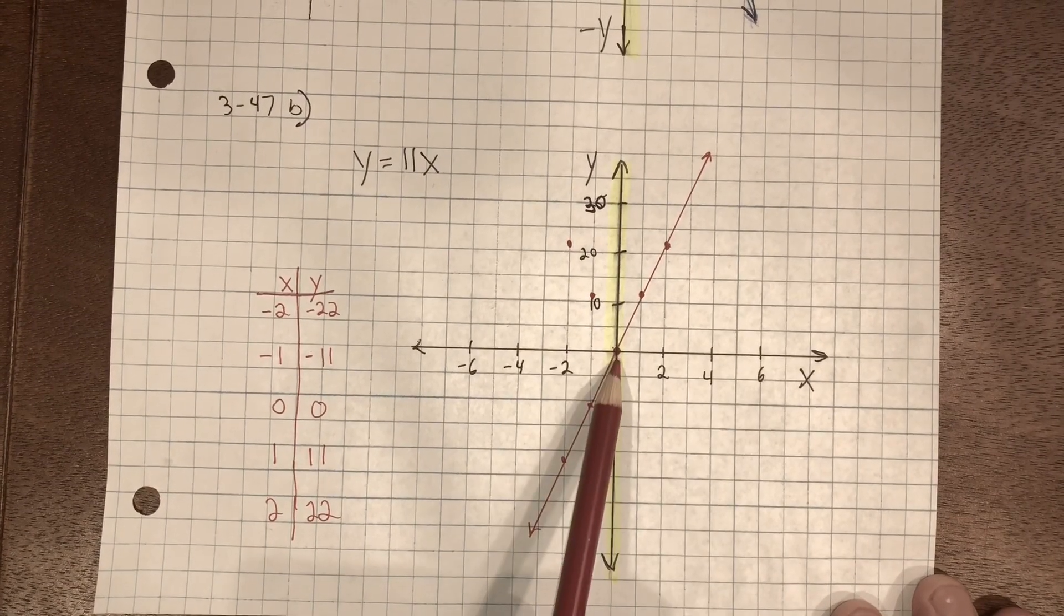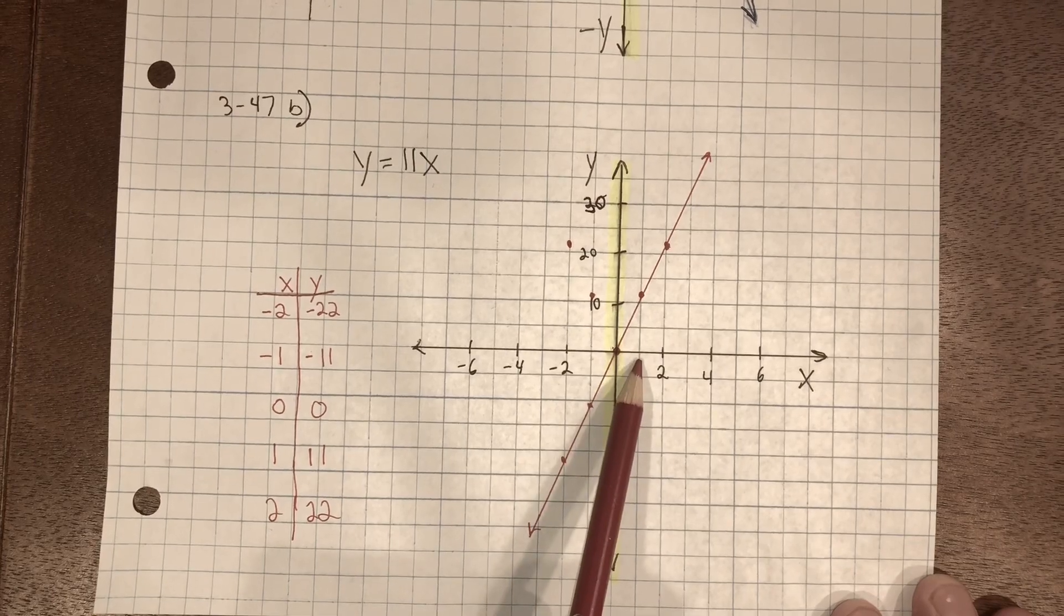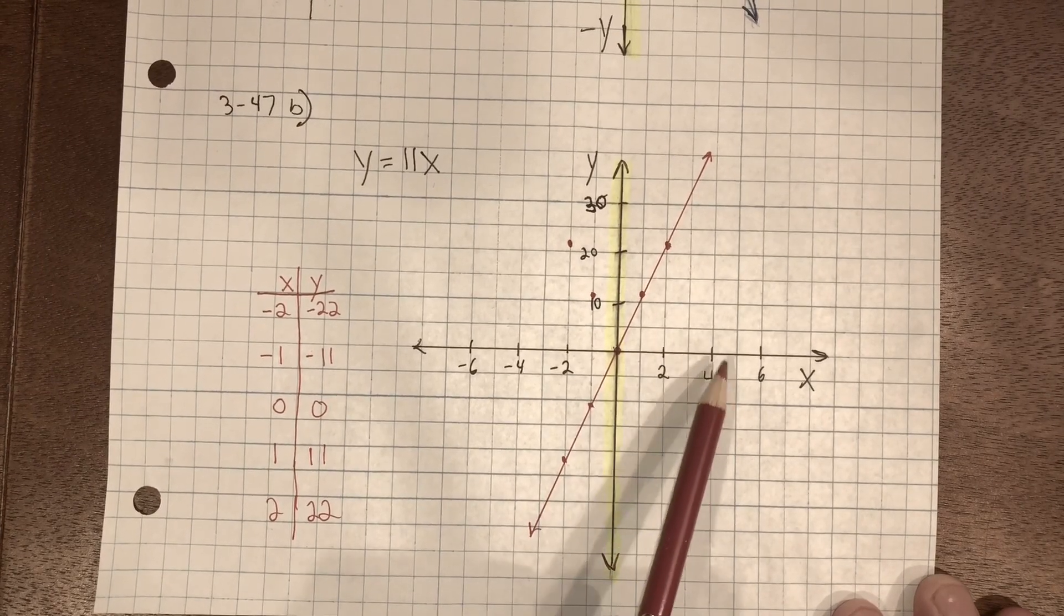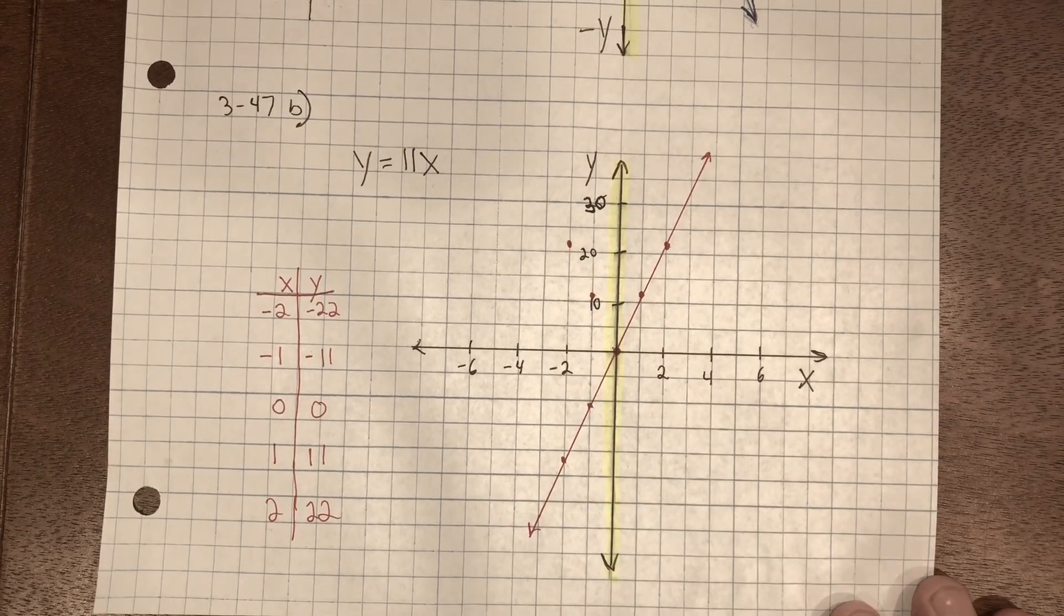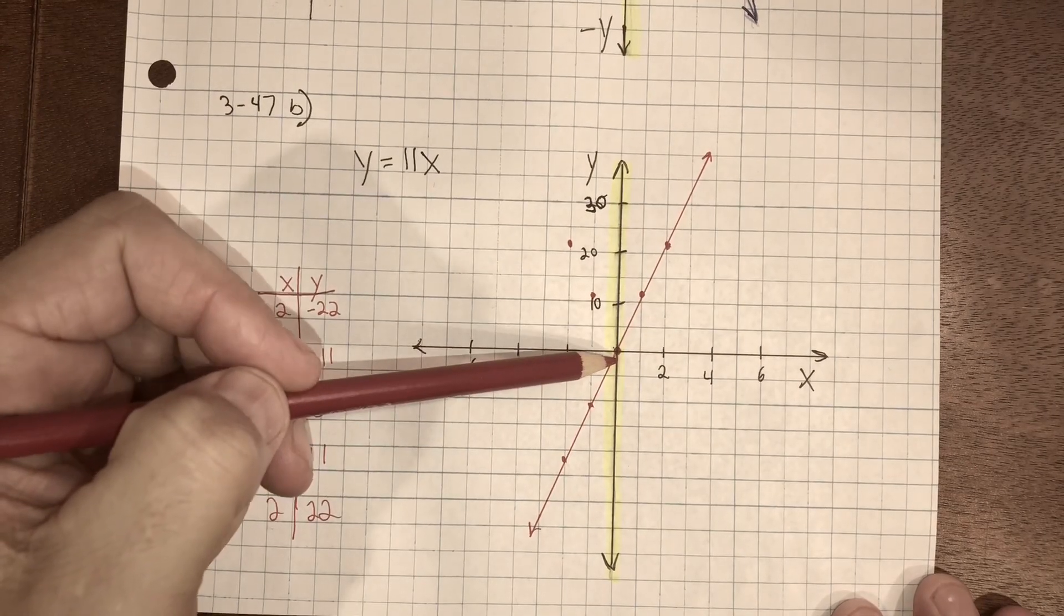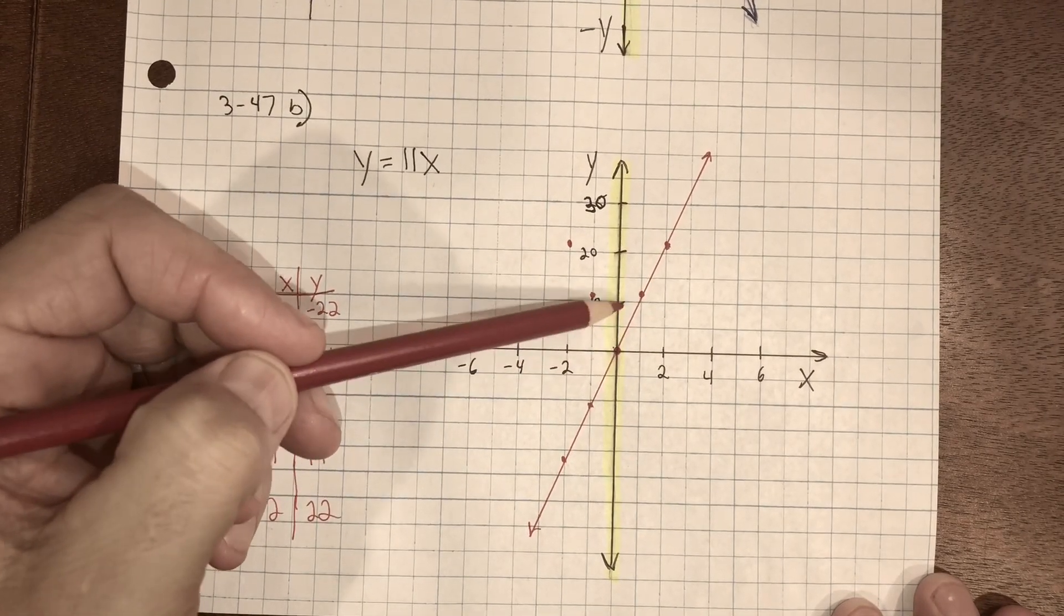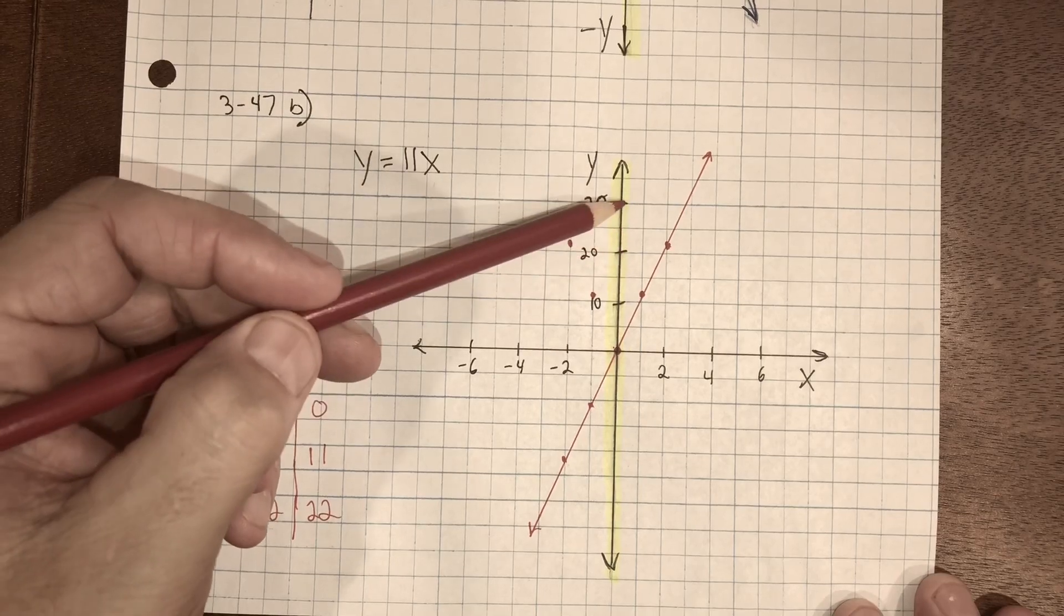On the x-axis, I went by ones: one, two, three, four, five, six. On the y-axis, I went by fives: five, 10, 15, 20, 25, 30.